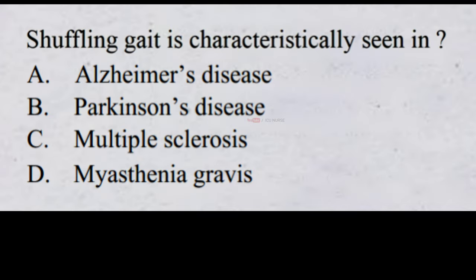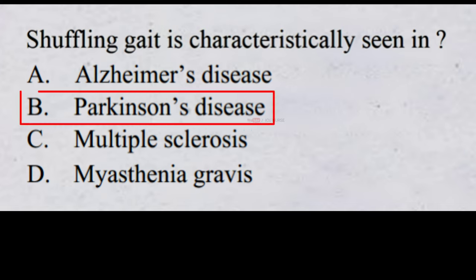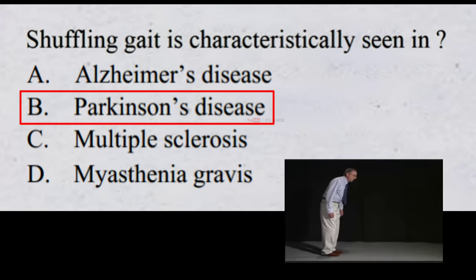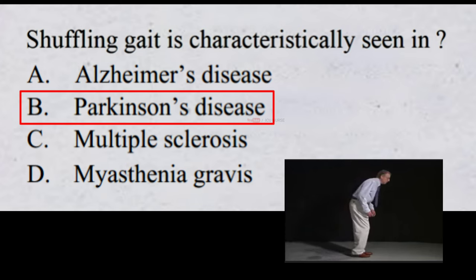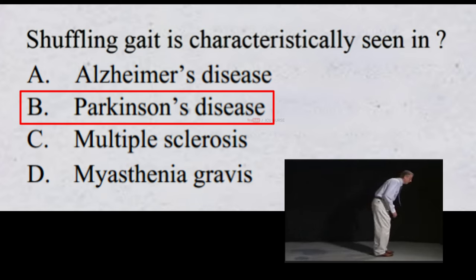Shuffling gait is characteristically seen in: A. Alzheimer's disease, B. Parkinson's disease, C. multiple sclerosis, D. myasthenia gravis. The correct answer is B, Parkinson's disease. Shuffling gait is a type of walking characterized by dragging one's feet along without lifting the feet fully from the ground. The most common cause of shuffling gait is Parkinson's disease.